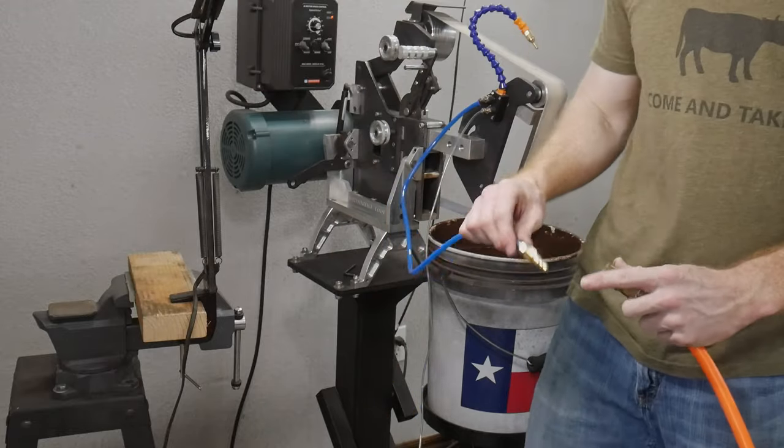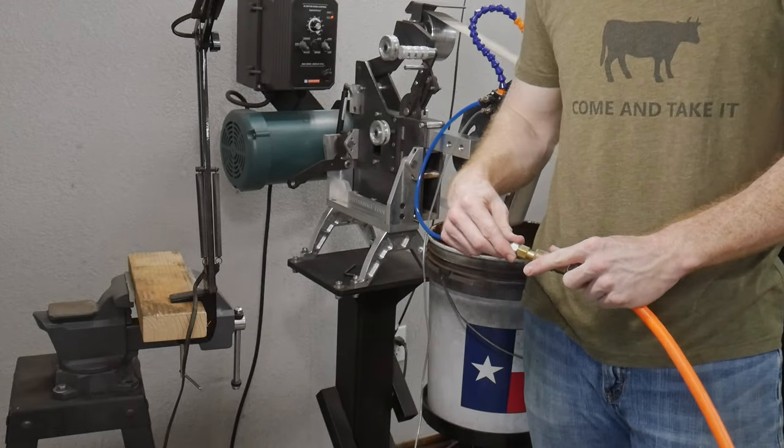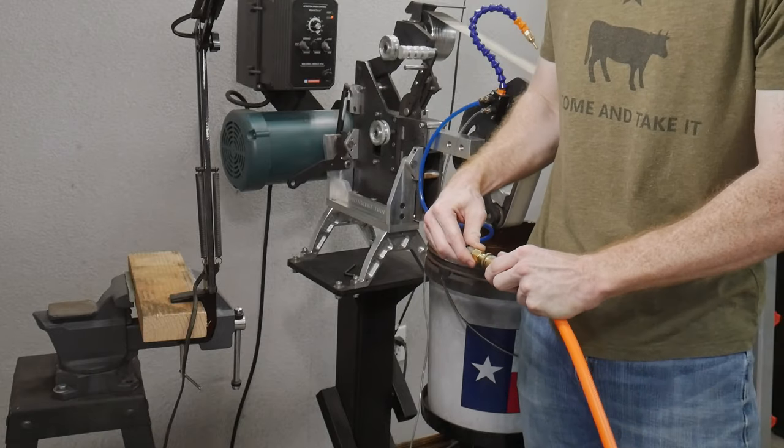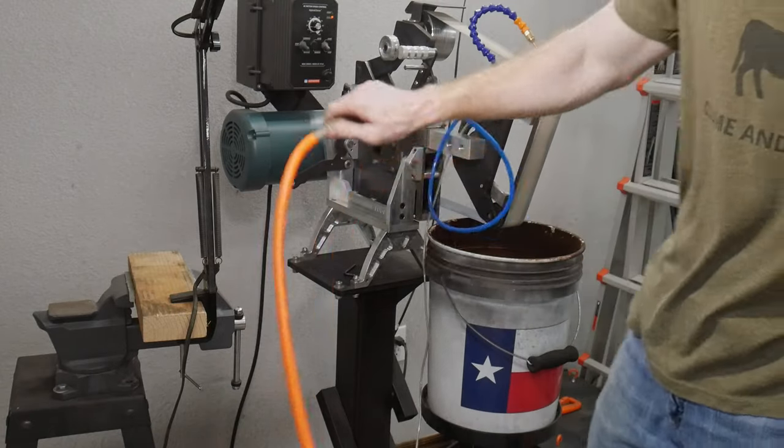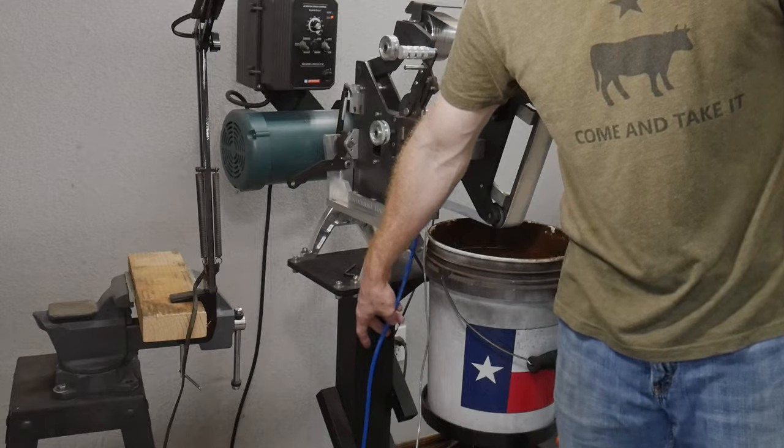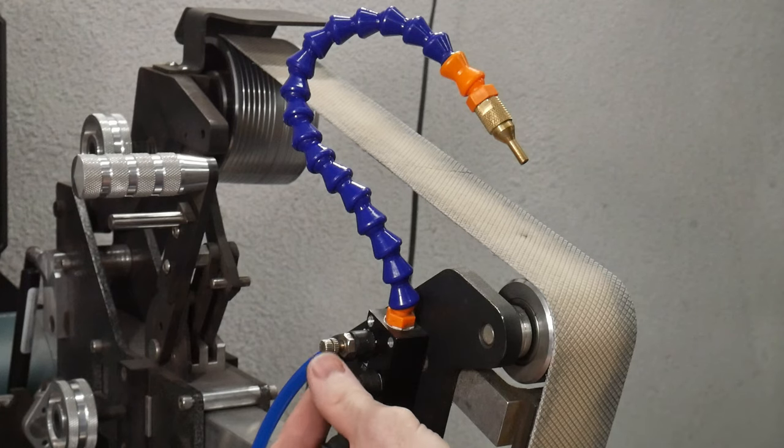You'll then attach the airline. The manufacturer's spec on the operation pressure for this mister is between 70 and 100 PSI, however I've been running it at 50 PSI with no issues. At this point I open the liquid control valve then start cracking open the air control valve.